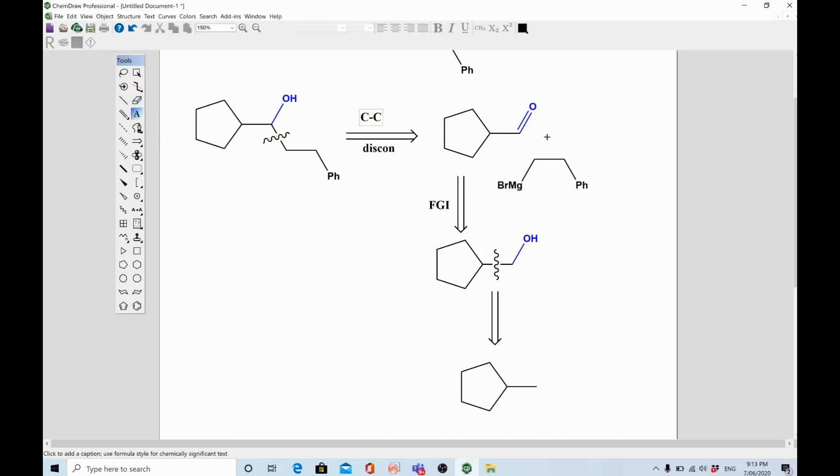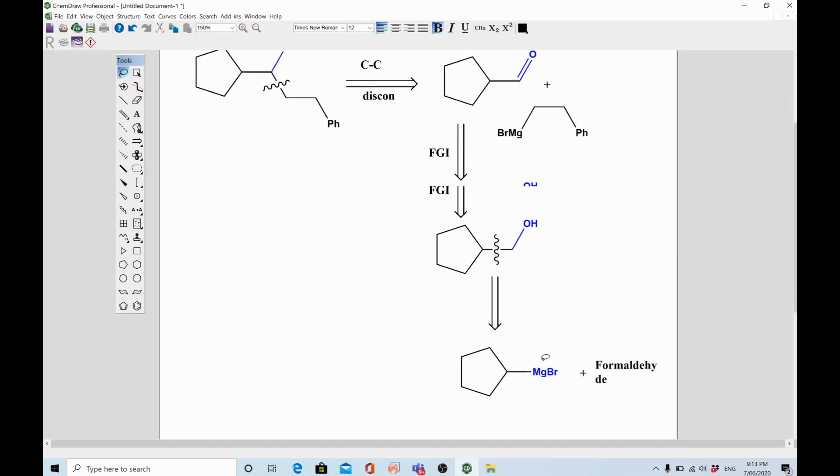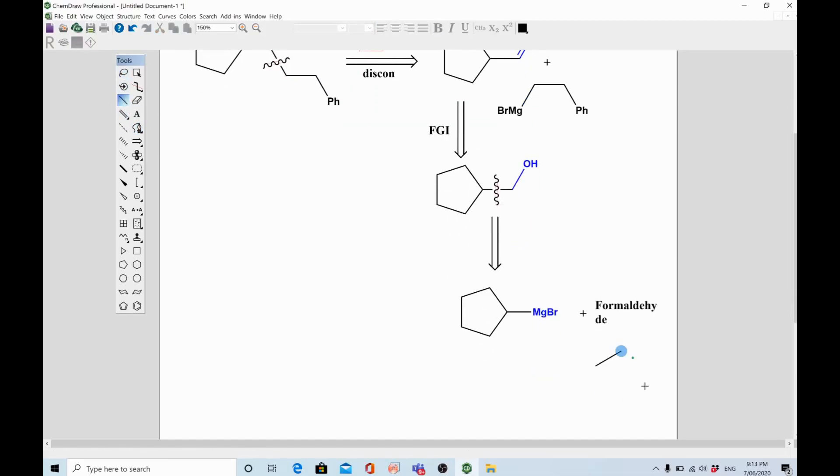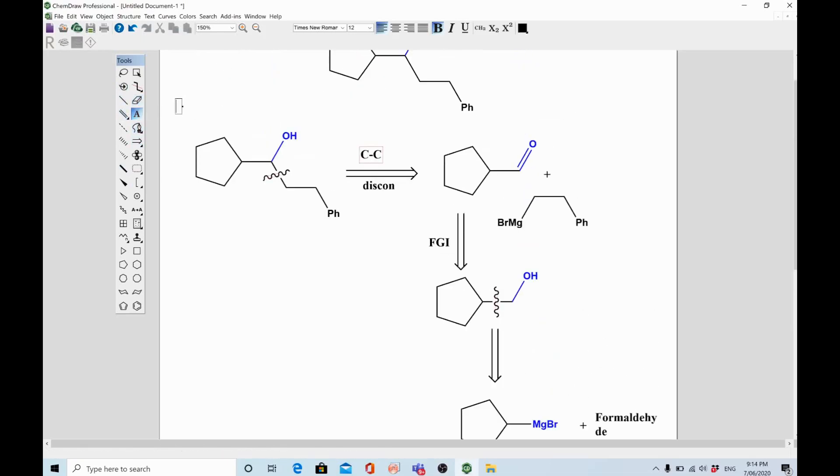One will become aldehyde, the other will become the Grignard reagent. Then again, you can go in a forward direction by reacting Grignard reagent with simplest aldehyde, that is formaldehyde. Formula of formaldehyde is carbonyl compound having two hydrogens on both of the sides. This becomes simplest member of aldehyde family.